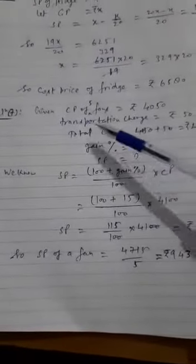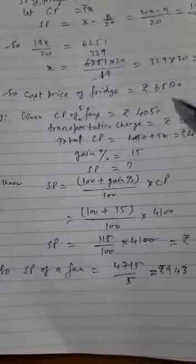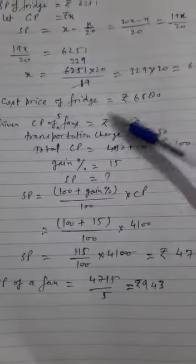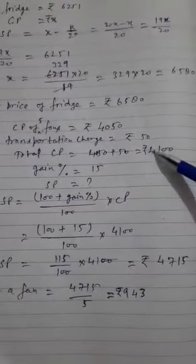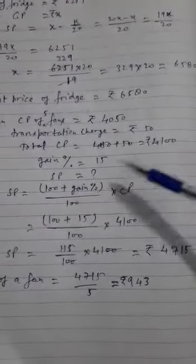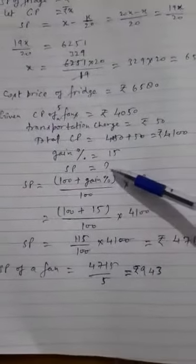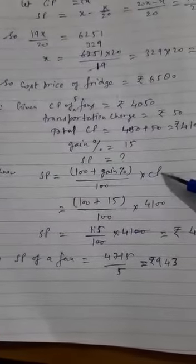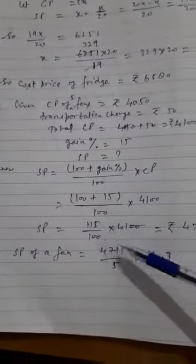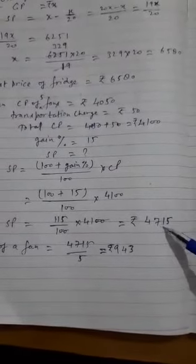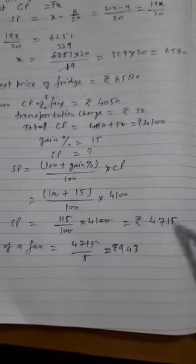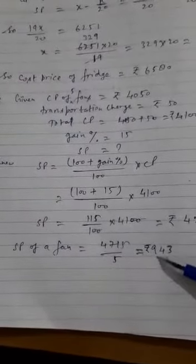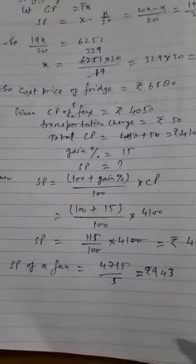Question number 7: The cost of five fans - CP given, transportation charge 50 rupees. Total CP dono ko add karke 4100 aa gaya. Gain percent hai 15%, so SP aapko find out karna hai. SP ka formula lagayenge jis mein gain percent given. After putting the value, SP will be 4715. Yeh five fans ka SP hai. One ka nikalane ke liye divide karna padega by five: 943 is the SP for one fan.